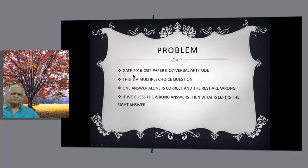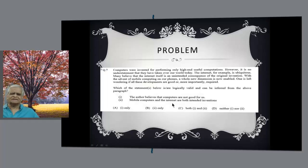Here is the problem. GATE 2016 Computer Science and Information Technology Paper 2, Question 7. Verbal aptitude is a multiple choice question. There are four choices. One choice is correct. Three choices are wrong. If you can guess the wrong answer, what is left is the right answer.